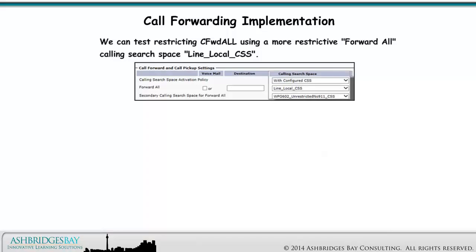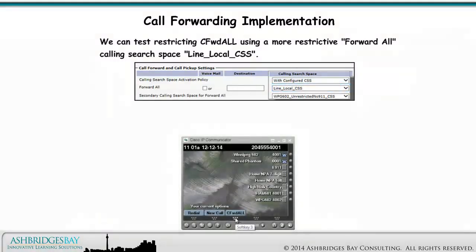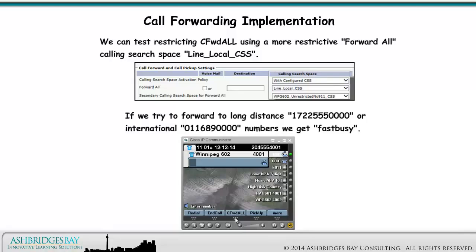We can test restricting call forward all using a more restrictive forward all calling search space — line local calling search space. If we try to forward to long distance or international numbers, we get fast busy.